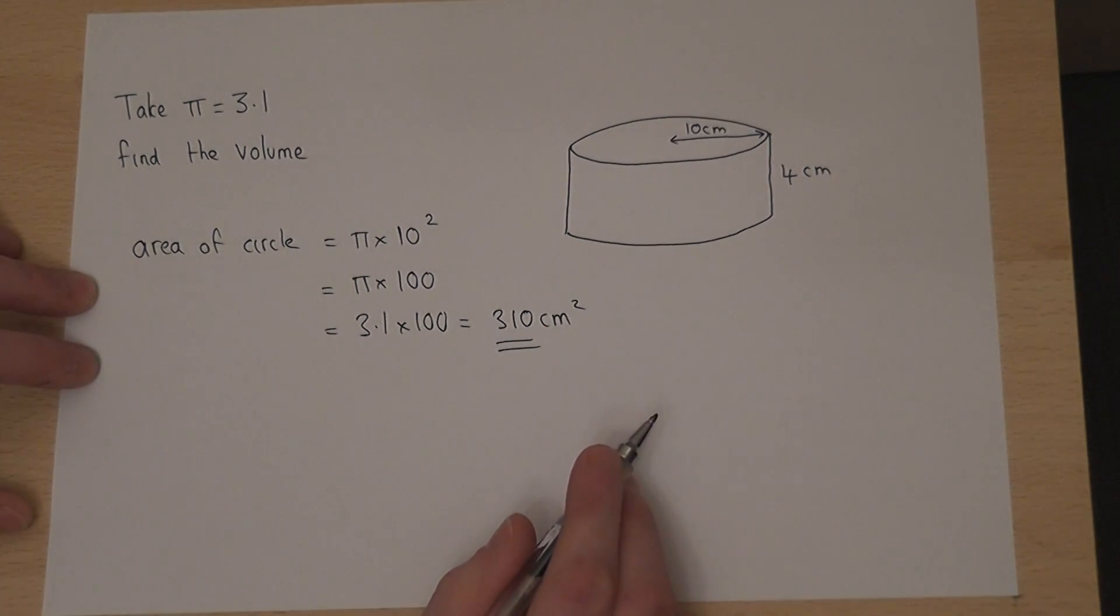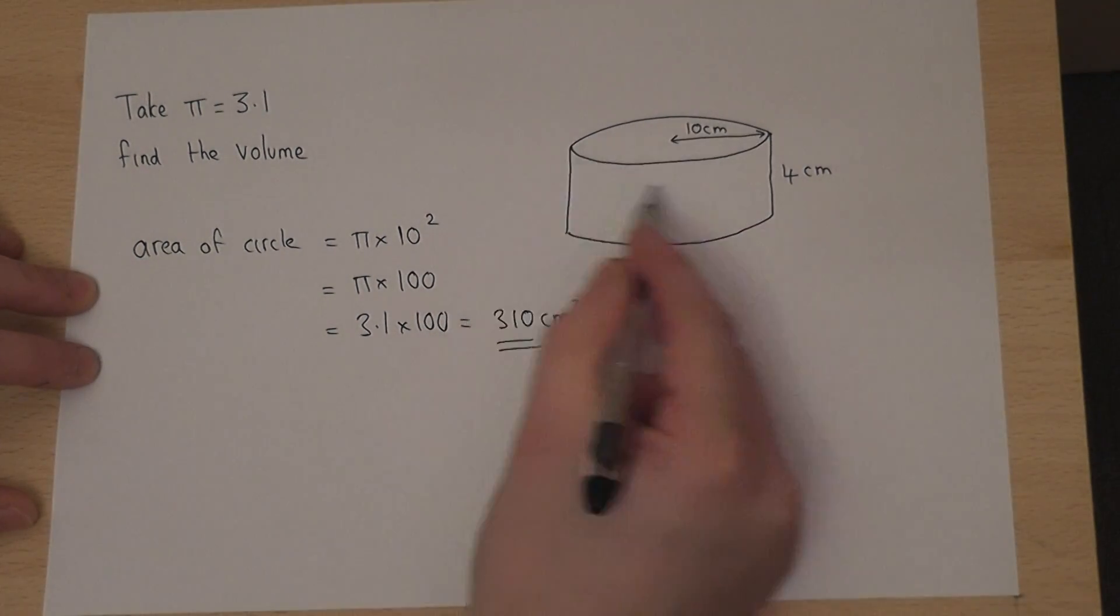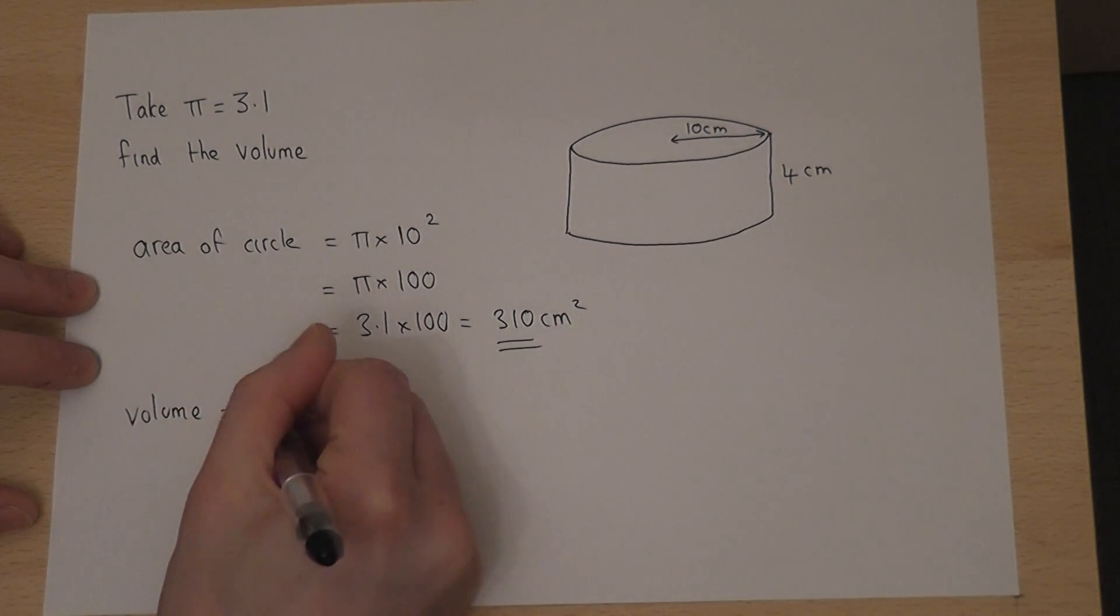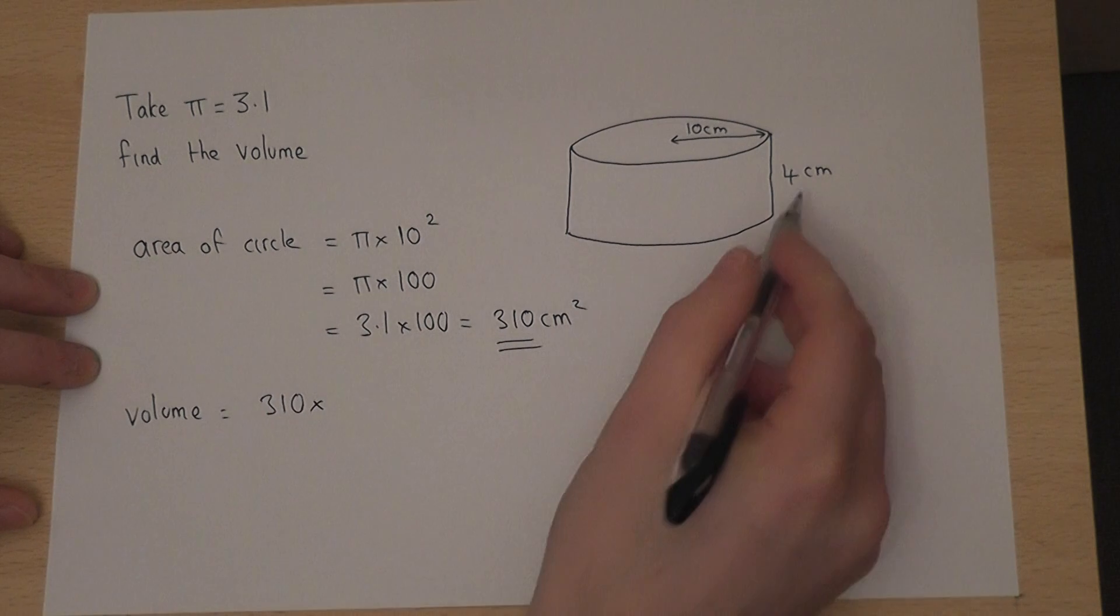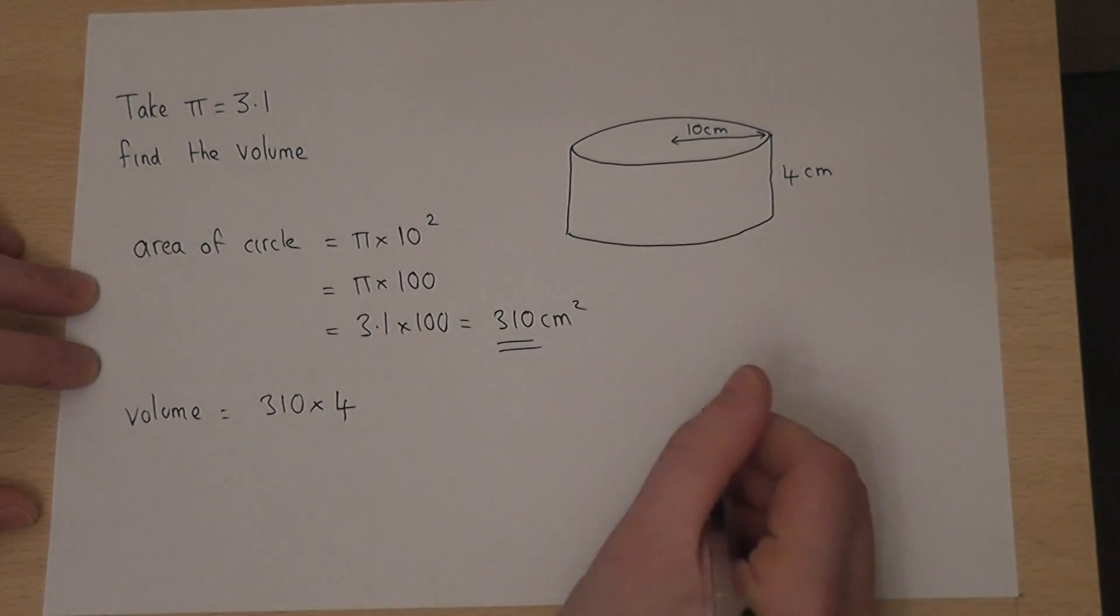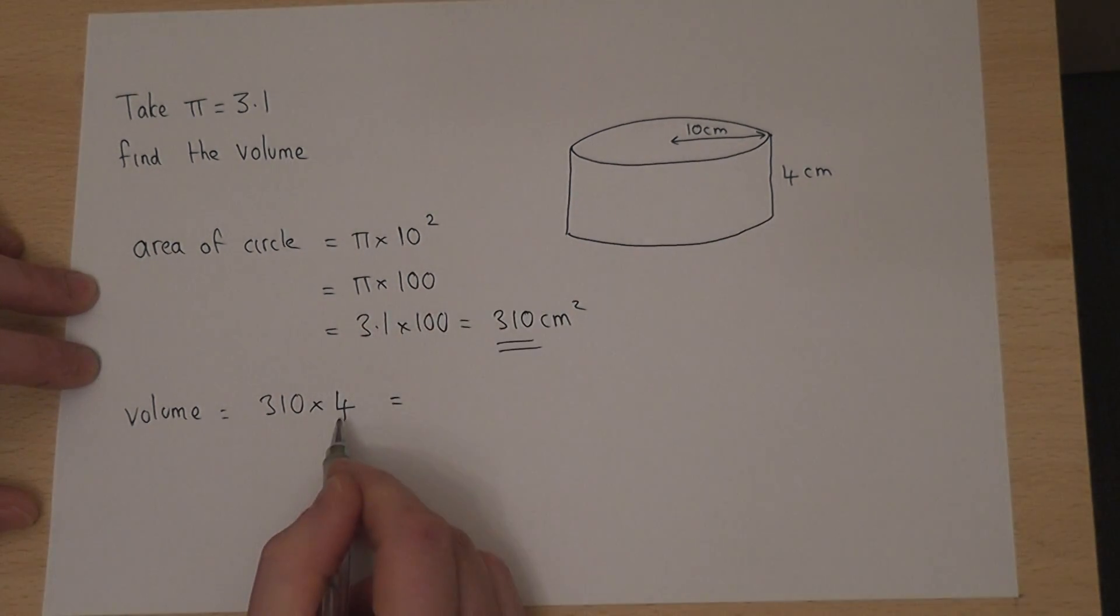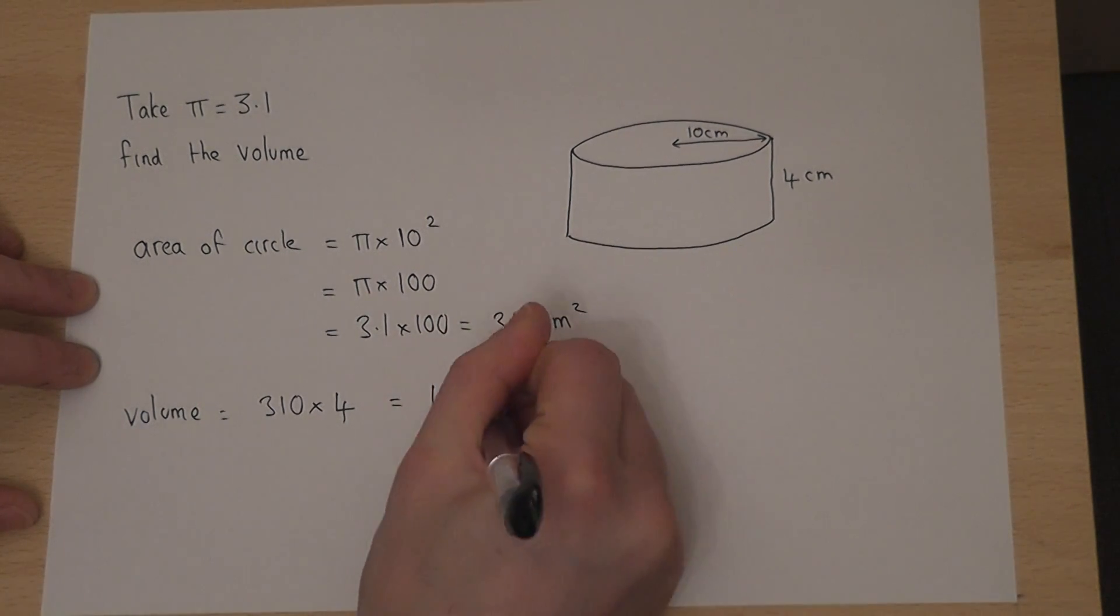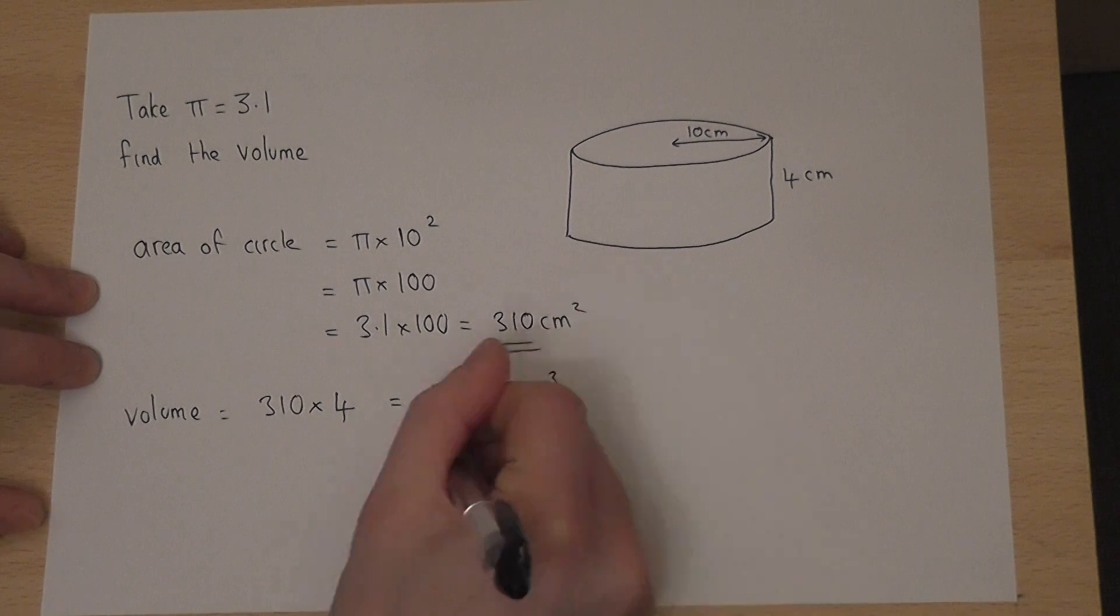Then, to find the volume, we take the area of the face, which we found to be 310, and times this by the depth of the shape, which is 4. So 4 times 310 is 1240. It's a volume, so it's centimetres cubed.